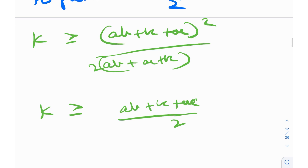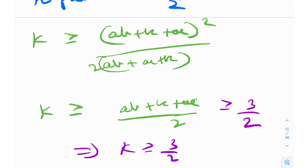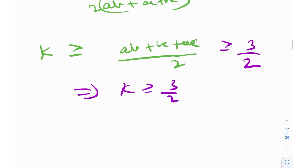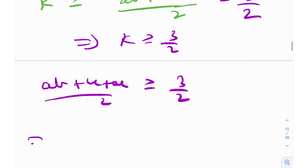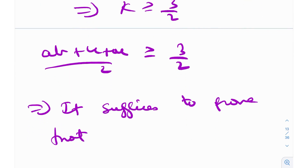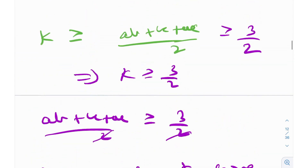If I can prove that ab + bc + ca ≥ 3, that would imply k ≥ 3/2. So it suffices to prove ab + bc + ca ≥ 3, because then (ab + bc + ca)/2 ≥ 3/2, and thus k ≥ 3/2, which is what we had to prove.